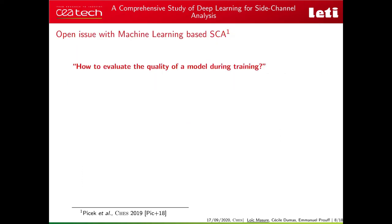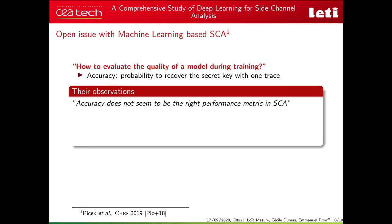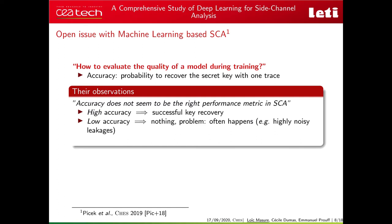Last year at CHESS 2019, Picek et al. raised an open issue with machine learning-based SCA: how to evaluate model quality during training. They considered the accuracy metric, which in SCA can be seen as the probability to recover the secret key with one trace. They found that accuracy is not the right performance metric: models with high accuracy always gave successful key recovery, but models with low accuracy were sometimes successful and sometimes not — non-conclusive. This problem typically arises with high noise or in the presence of countermeasures, making accuracy uninformative about SCA success.